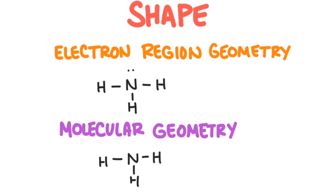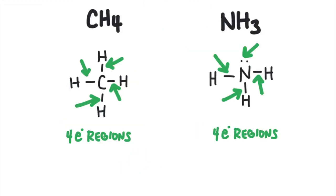When we consider the shape of a molecule, we consider two different geometries. First we consider the electron region geometry — how the electron regions are arranged around a central atom. We also consider the molecular geometry, which is how the bonds are arranged around the central atom. The molecular geometry is different from the electron region geometry because with molecular geometry, the lone pairs are invisible. We can only see atoms and so we only see bonds. NH3 and CH4 both have the same electron domain geometry, but they have different molecular geometries — the shape of the two molecules, in other words, are different.